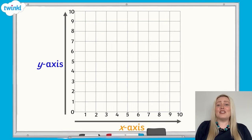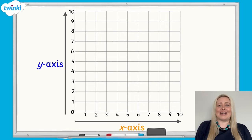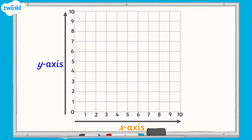When you read coordinates, you use the numbers on the x-axis first, followed by the numbers on the y-axis. For example, this point is located at 6, 7.